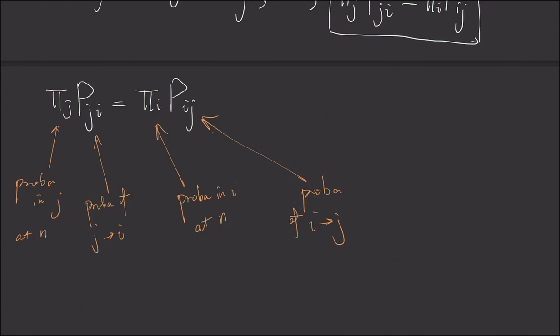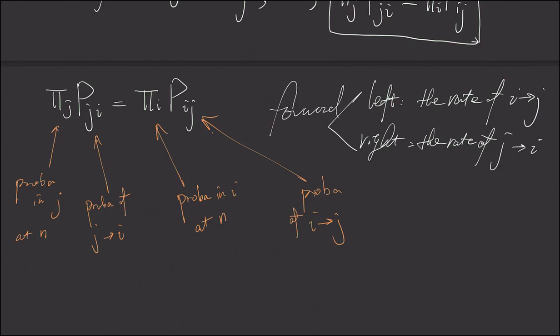the left side is the rate that this Markov chain goes from i to j. And the right side is the rate of this Markov chain. I mean, the forward. They are all forward. This Markov chain, the rate of this Markov chain from j to i.